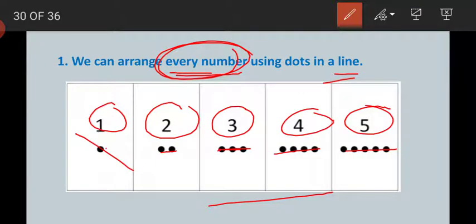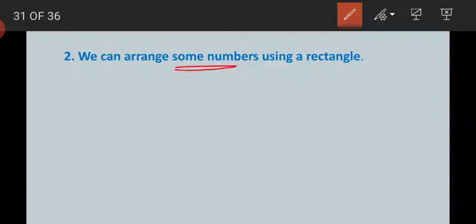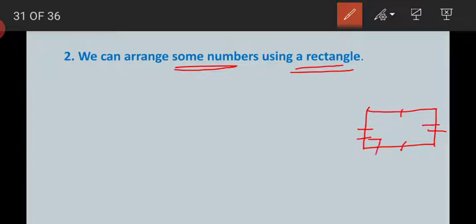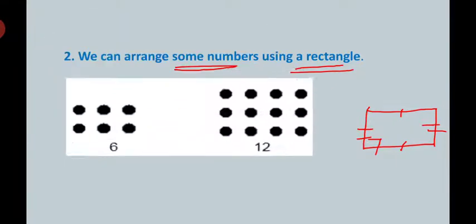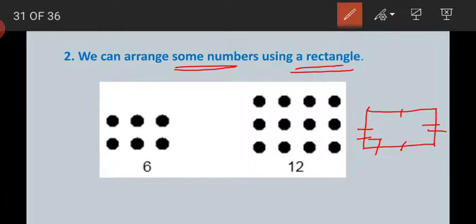Now come to the second one. We can arrange some numbers using a rectangle. A rectangle is a shape whose opposite pairs of sides are equal, and each angle is 90 degrees. By using six dots we can make a rectangle — if we arrange them in this way it forms a rectangle.